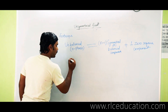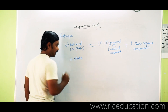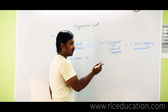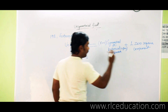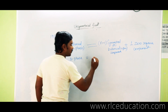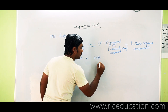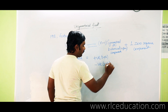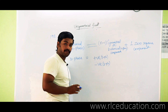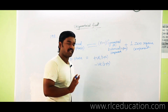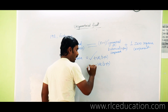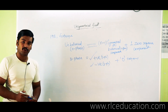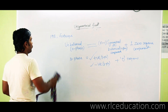In a three-phase unbalanced system: positive sequence is a balanced three-phase set, negative sequence is also a balanced three-phase set but with opposite rotation direction, and zero sequence has all three phasors co-phasal — meaning the angle between them is zero degrees. So one unbalanced system splits into positive sequence, negative sequence, and zero sequence.